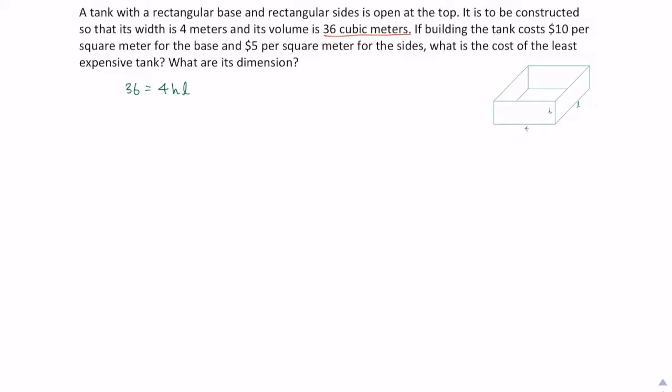The other thing we can come up with is that we can think about the cost. The way we think about the cost is, the cost is separated into two parts because we have the base and we have the sides. So the total cost will be the cost of the base plus the cost of the sides. We have to use these two costs, and how do we calculate these costs?